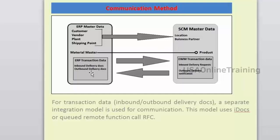Transactional data is always bidirectional because we work with goods issues and goods receipts — those are done only in the EWM box. An inbound or outbound delivery is created in ECC, distributed to EWM, you perform the GR or GI in EWM, and then the status is sent back to ECC. Master data is unidirectional; transactional data is bidirectional.